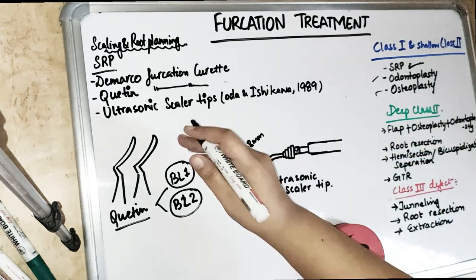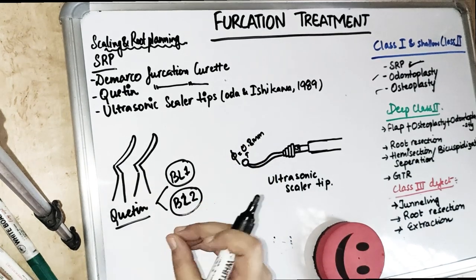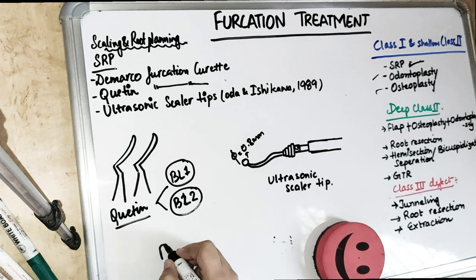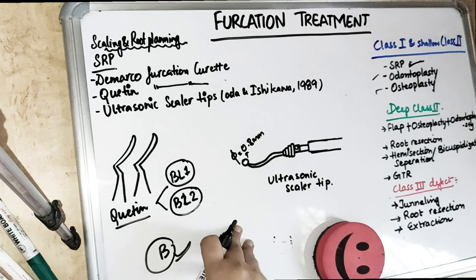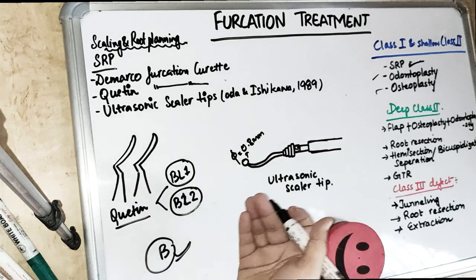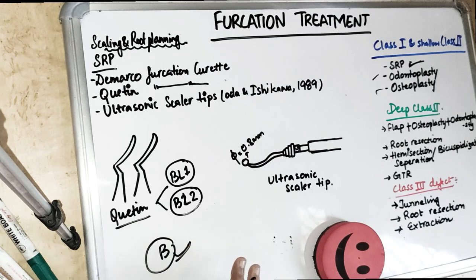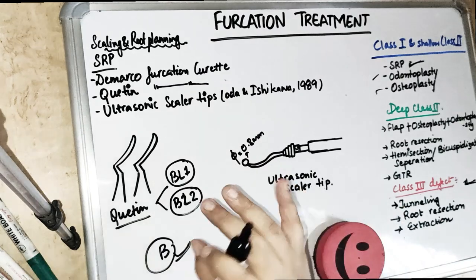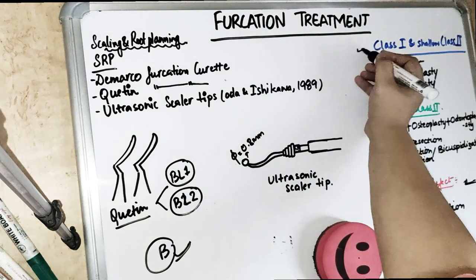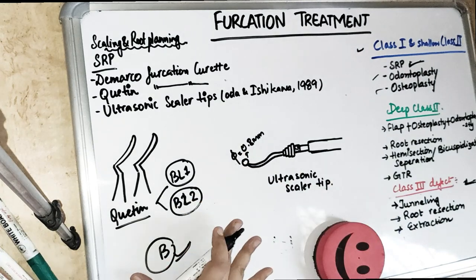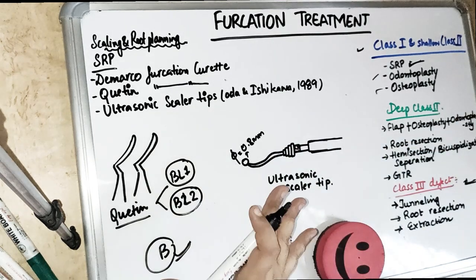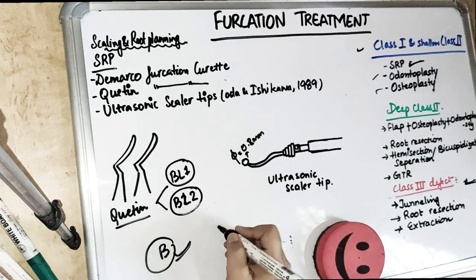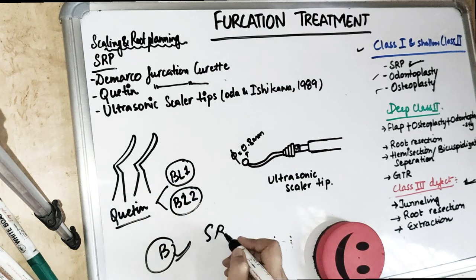The most common teeth involved in furcation is the maxillary or mandibular buccal Class 2 furcation area. Next is the mesial or distal maxillary Class 2 furcation. The least seen defects are Class 3 and Class 4. Class 1 defect is just the initial defect, so it can be treated with a non-surgical approach. Shallow Grade 2 can also be treated non-surgically — we can just do scaling and root planing.